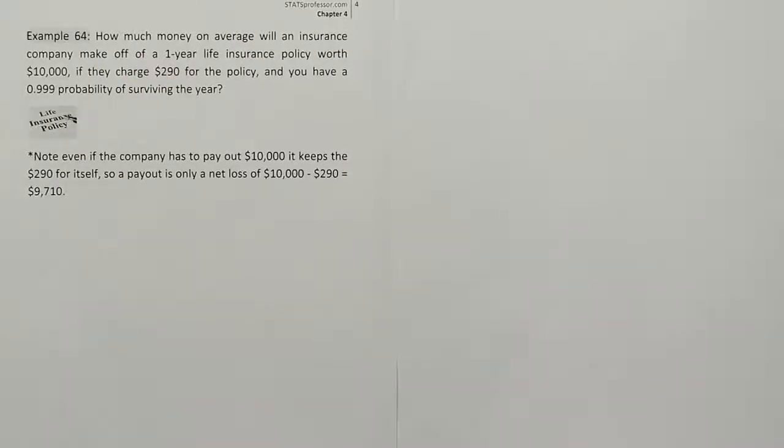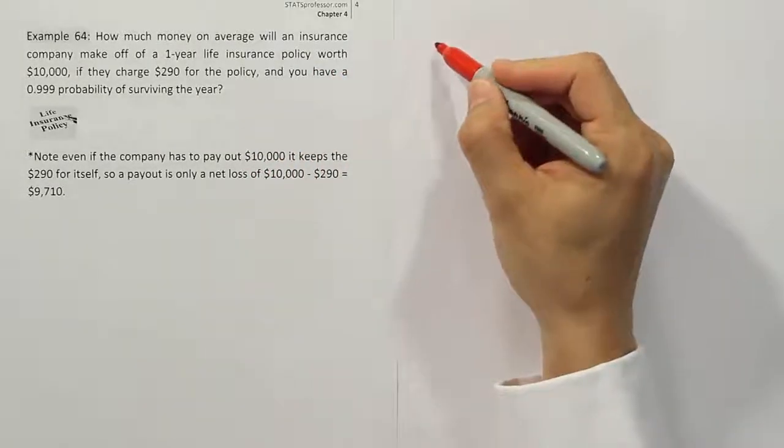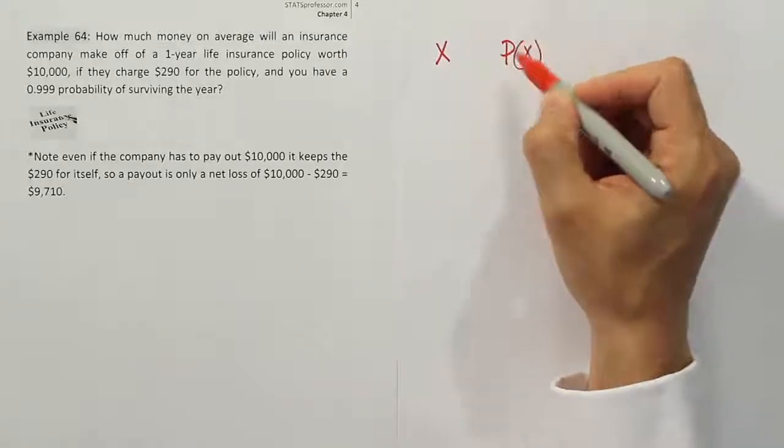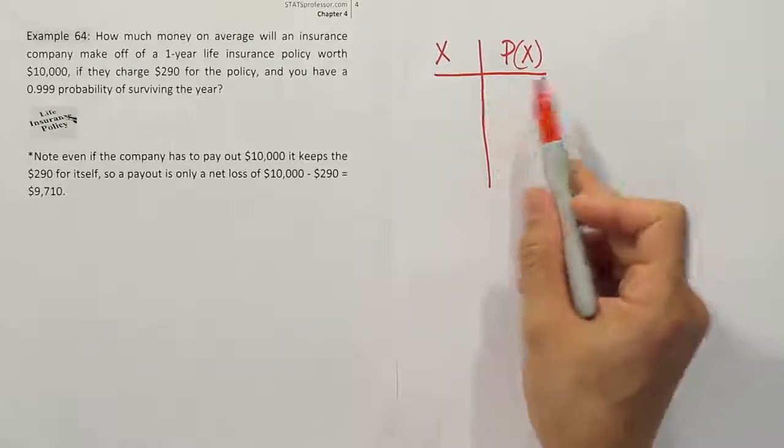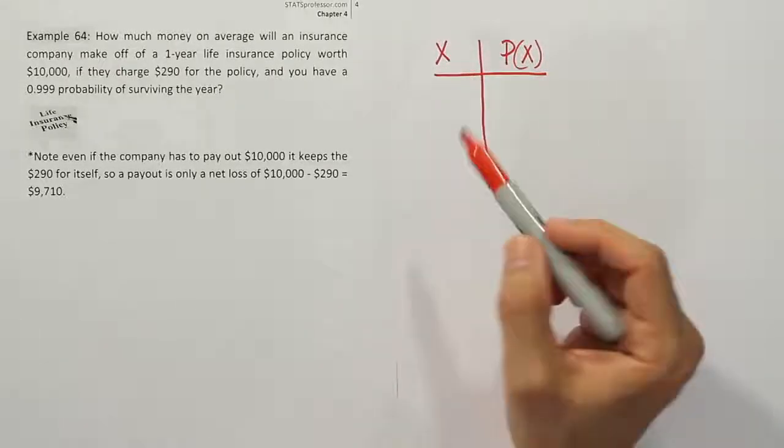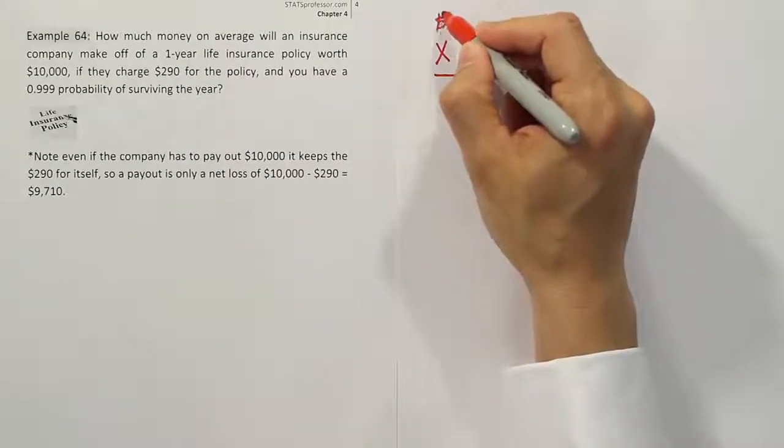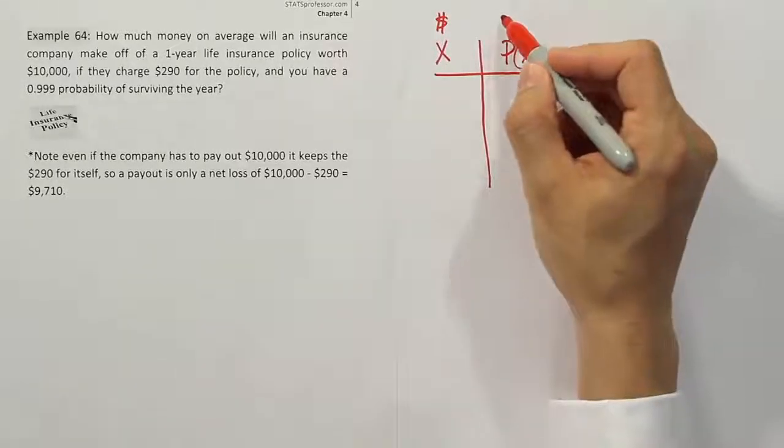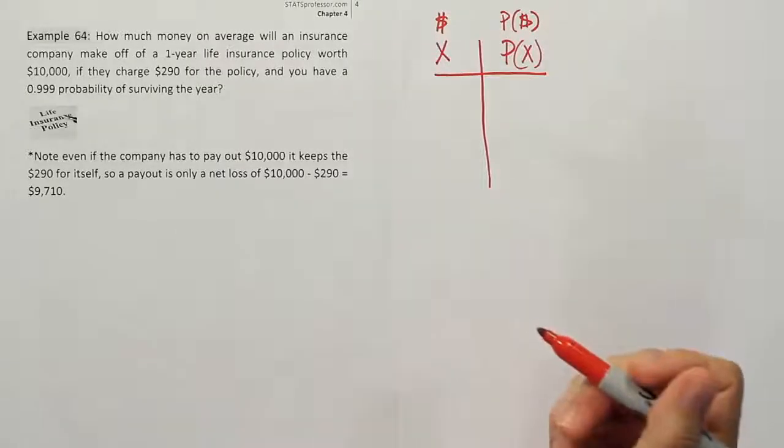Once you know it's an expected value problem, you're going to want to set up a probability distribution typically. There are faster ways sometimes, but in the beginning when you're first learning, it's a good idea to do the problem this way. So we're going to create a table that has x times p. The x represents the possible outcomes, which in this case is a dollar amount, and the probabilities will be the probability that you make or lose that money.